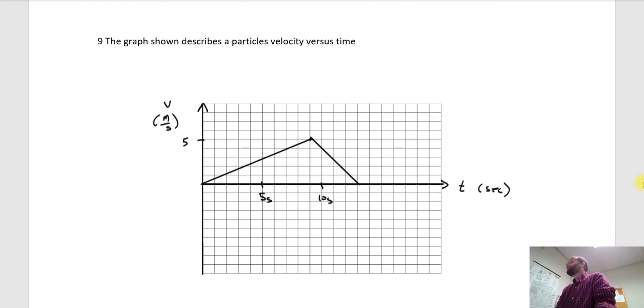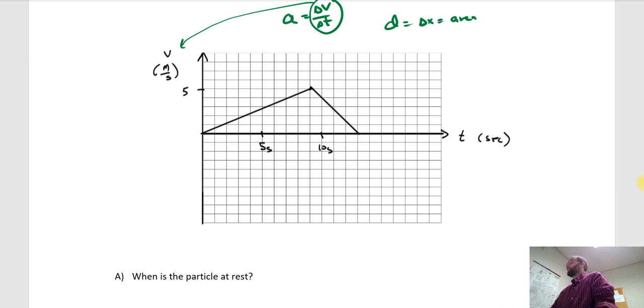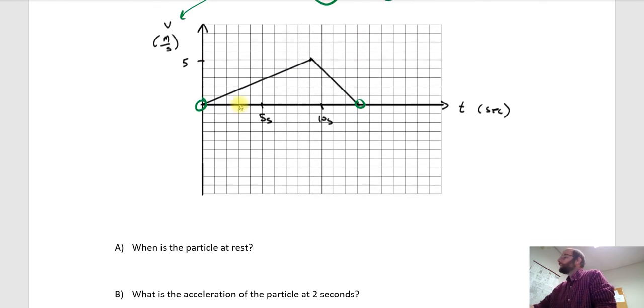So this one is a velocity graph. And some important things about this graph that I'm sure is going to come up. Acceleration is change in velocity over change in time. This is a slope, slope of a velocity graph. So any questions about acceleration is asking for slopes. And then any questions asking for distances or changes in x we're going to get from area. So let's see, when is the particle at rest? So it's going to be at rest anytime the velocity is zero. So that's here and here.